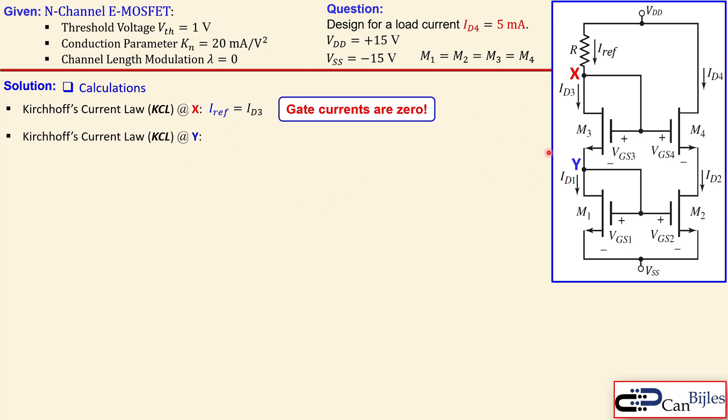We can also set up now the equation for Kirchhoff's current law at node Y. That is now ID1 will be also ID3. Why? Because ID3 will be also the source current of M3, which is then also equal to ID1. Because again, the gate current of M1 and M2 are zero, so there is no current flow here in this branch.